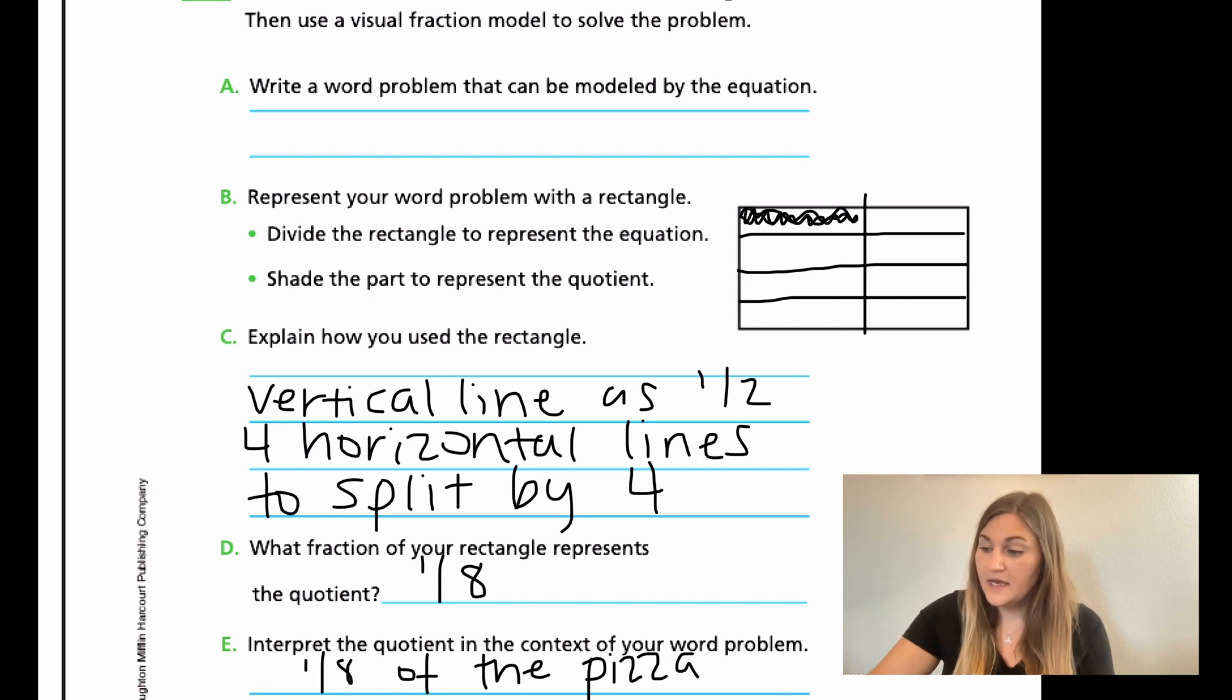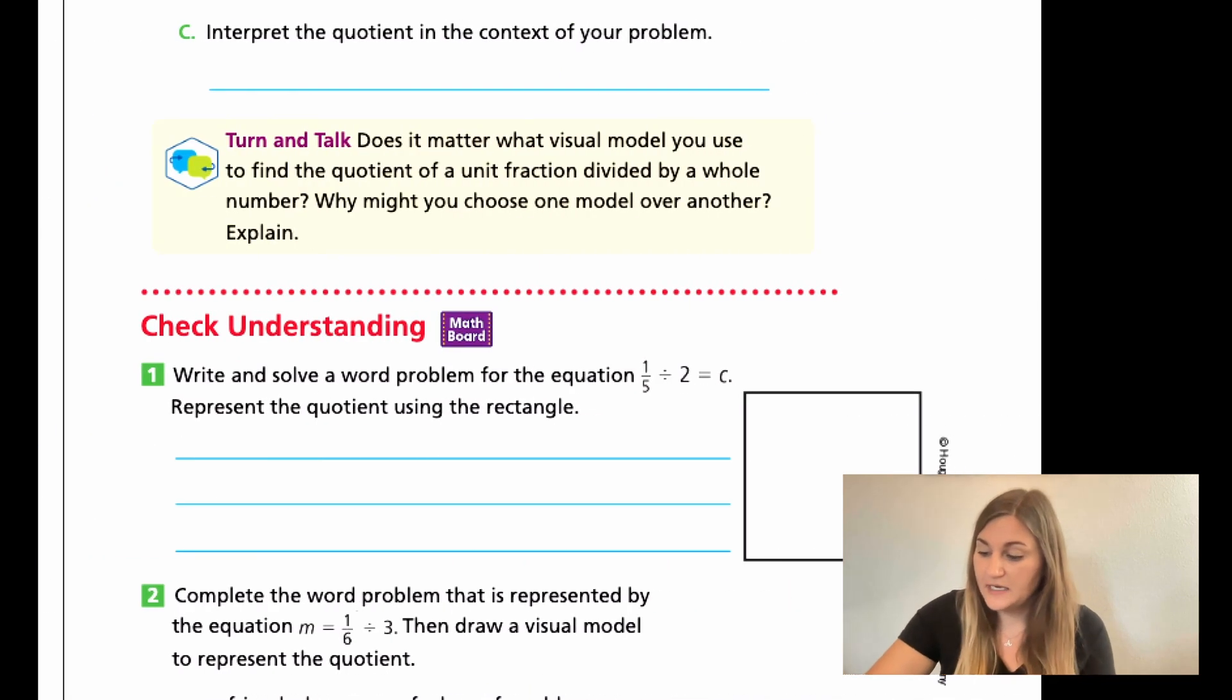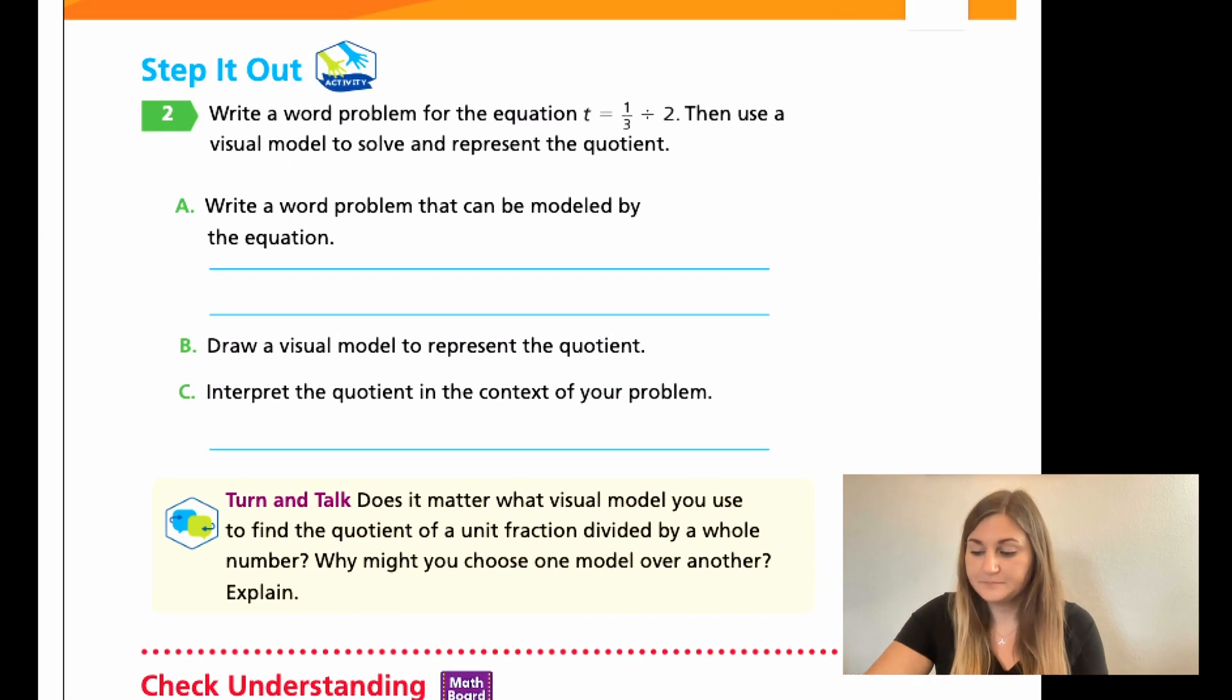All right. Let's go ahead and go to the next page, 284. And then, we have a step it out problem number two. It says, write a word problem for the equation T equals one-third divided by two. Then, use a visual model to solve and represent the quotient. We're pretty much doing the exact same things, just with different numbers.